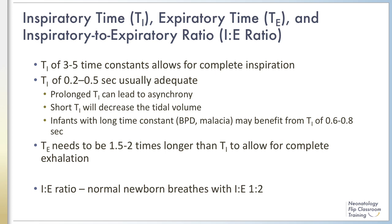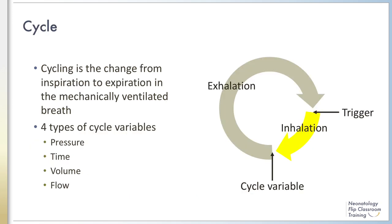Exhalation generally takes about twice as long as inhalation. Therefore, you need an expiratory time that is 1.5 to 2 times longer than the inspiratory time to allow for complete exhalation and avoid air trapping. An I to E ratio is normally 1 to 2. The change from inspiration to expiration in the mechanically ventilated breath is termed cycling.